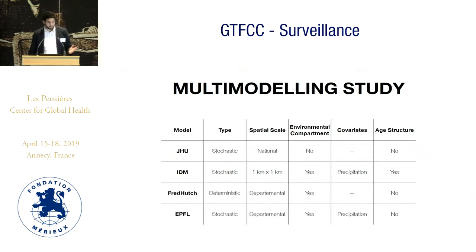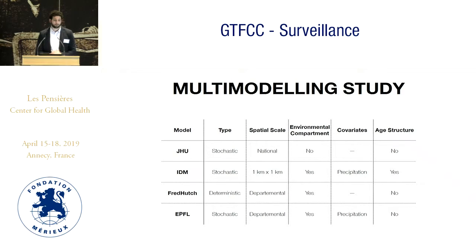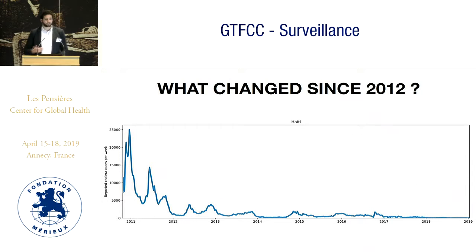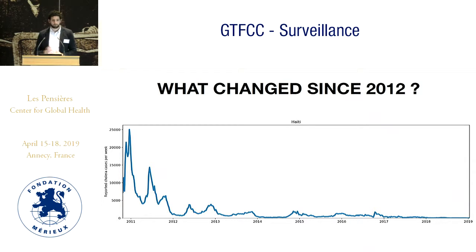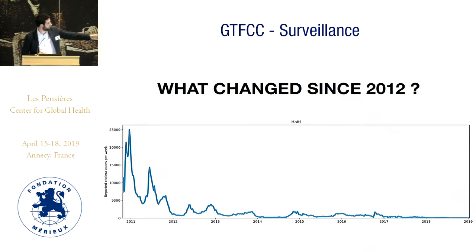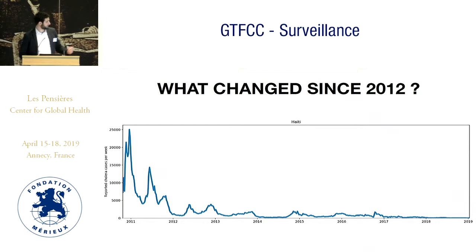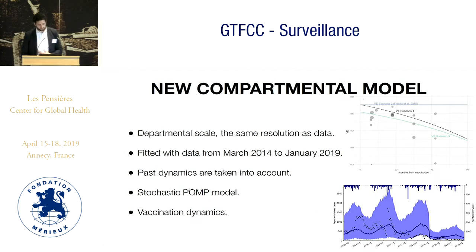I'm going to speak about our model, because we haven't yet gotten together to merge the results of every group, so I'll focus on the EPFL model. What changed since 2012: the dynamics changed a lot. We don't see seasonality as clearly as before — we still see it — but there's a lot of stochasticity in sporadic cases, like the epidemic in Port-au-Prince in 2017. There have also been plenty of interventions that have driven cholera down. So it's really needed to update models — you cannot use a model from 2012 to model what's happening right now.